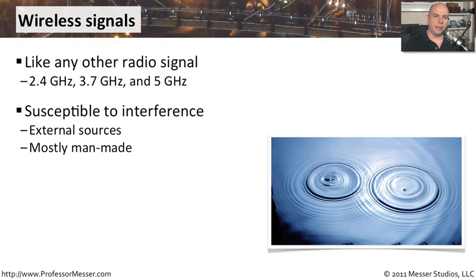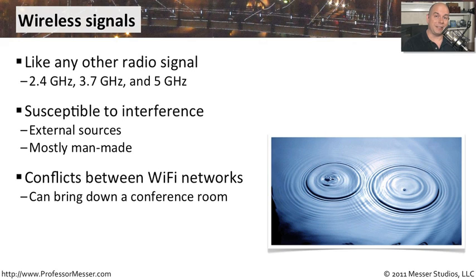The interference could be something external, or some other type of natural phenomenon, but it could also be man-made. A frustrating part of troubleshooting wireless networks is figuring out where those problems might be. Sometimes you create the problems yourself — connecting different wireless access points and accidentally setting the wrong frequencies, ending up having your own access points creating the very interference you're trying to avoid.